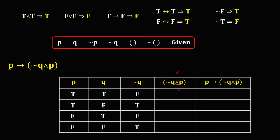For this column, observe that the connector is conjunction. For conjunction, if all true the truth value is true. From the NOT Q column and P: true and false is false; true and true is true; false and false is false; false and true is false. These are the values for this column.